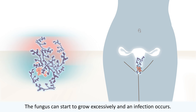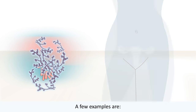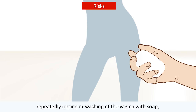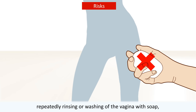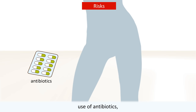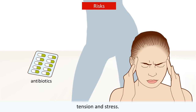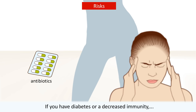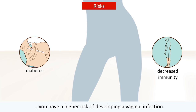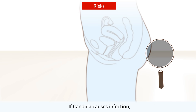Under certain circumstances this balance can get disrupted, and the fungus can start to grow excessively, causing an infection. A few examples of this are repeatedly rinsing or washing of the vagina with soap, hormonal fluctuations, use of antibiotics, tension and stress. If you have diabetes or a decreased immunity, you have a higher risk of developing a vaginal infection.